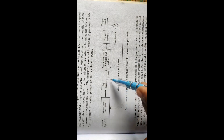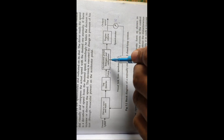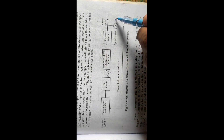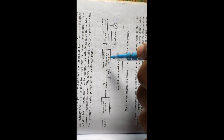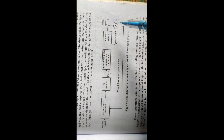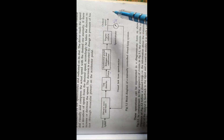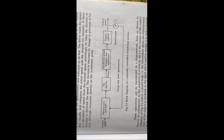For example, if the speedometer shows speed more than 60 kilometers per hour, the driver starts decreasing pressure on the accelerator. Or if the speed is less than 60 kilometers per hour, he starts increasing pressure on the accelerator. By seeing the output, he is changing his actions. This type is called a closed loop system, where the control system is dependent on the output.